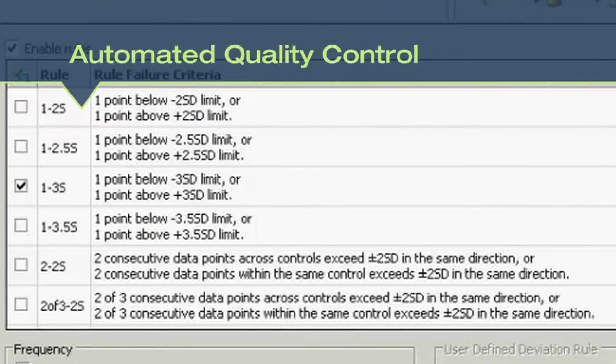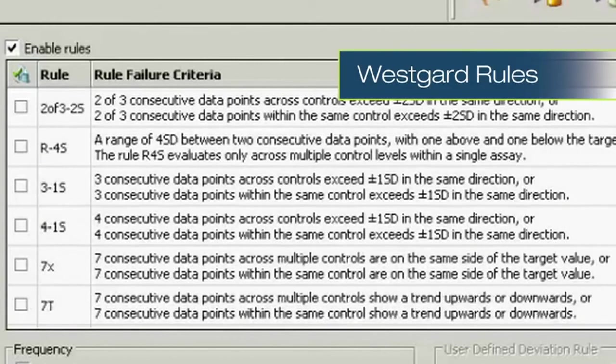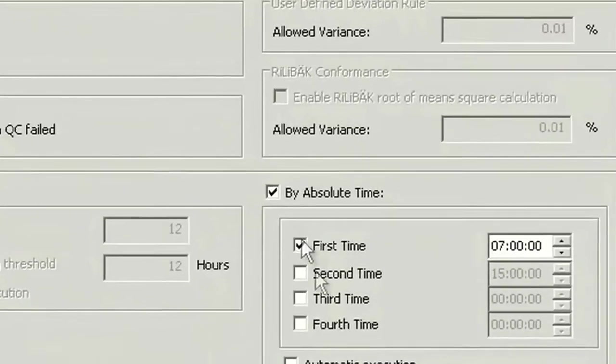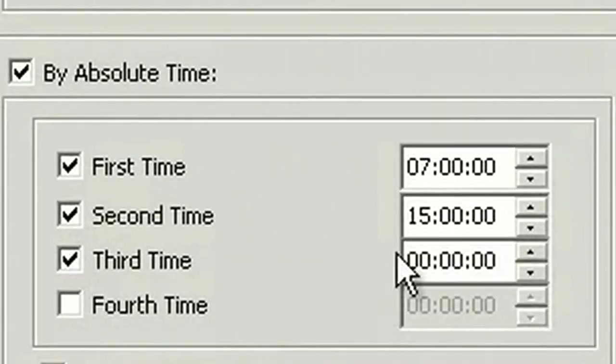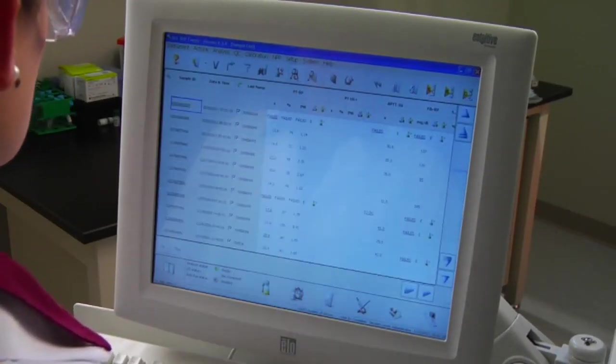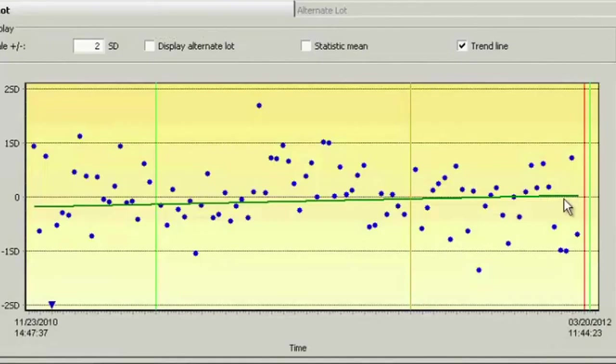The fully automated quality control system utilizes Westgard rules. Quality control can be run automatically at set intervals or performed at any time at the operator's discretion. The operator can choose to display quality control data either in a tabular or a Levy-Jennings format.